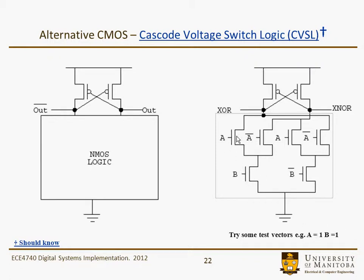We let A equal 1 and B equal 1. So these two N-type transistors are on, and we're going to pull this node low, so XOR is going to go low as we'd expect. That's correct — XOR goes low, and as this goes low, it turns on this P-type transistor and pulls up the XNOR. So that's basically the operation of the gate and how it should behave. It definitely has a differential amplifier type of flavor to it.